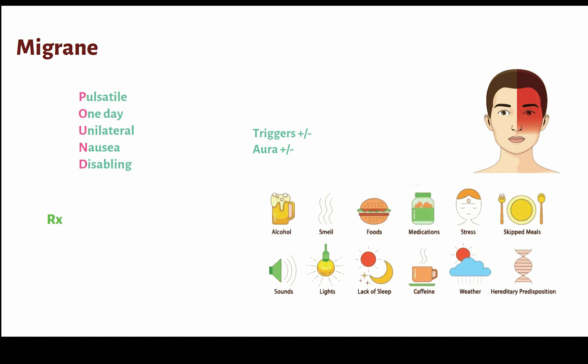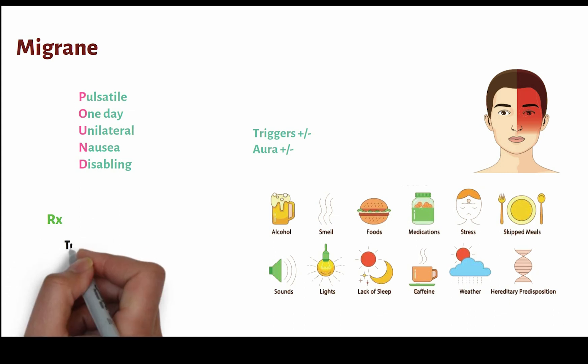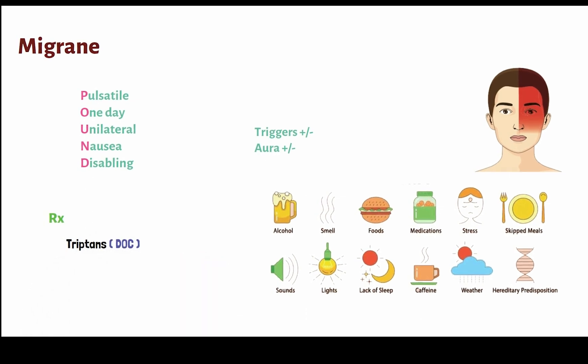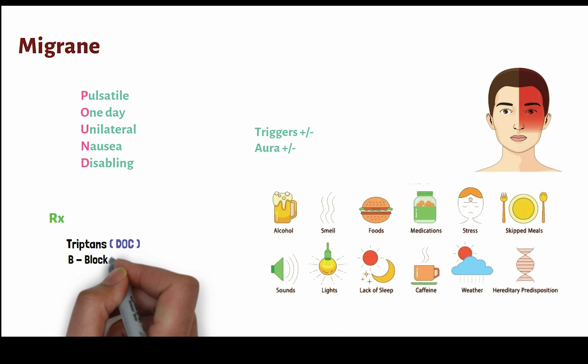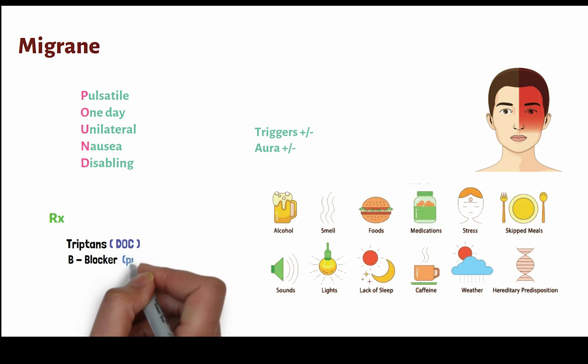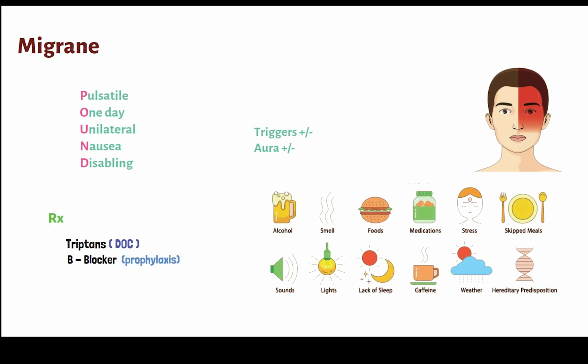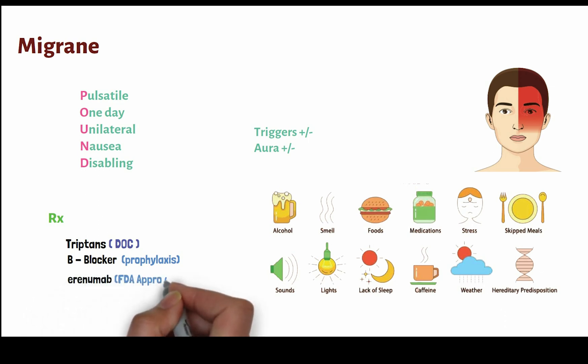How do we manage migraine? It is generally treated by triptans, which are the drug of choice. Beta blockers can be used as prophylaxis. FDA-approved erenumab, a CGRP inhibitor — calcitonin gene related peptide inhibitor — can also be used for treating this condition.